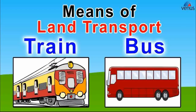Now we will learn about what is land transport. Land transport is the transport or movement of people, animals, or goods from one location to another location on land. The two main forms of land transport can be considered to be rail transport and road transport.